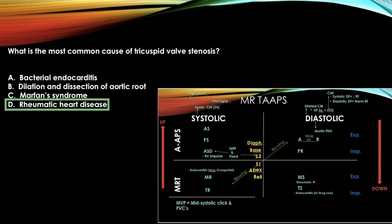The answer is rheumatic heart disease. The most common cause of tricuspid stenosis is rheumatic heart disease according to our chart — it's also the most common cause of mitral stenosis. Since mitral stenosis is not a choice, we go with tricuspid stenosis caused by rheumatic heart disease.